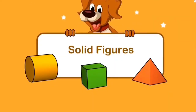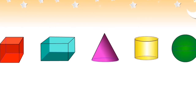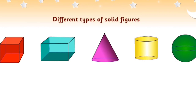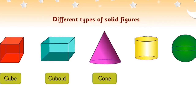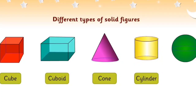Let us explore solid figures. The different types of solid figures are cube, cuboid, cone, cylinder, and sphere.